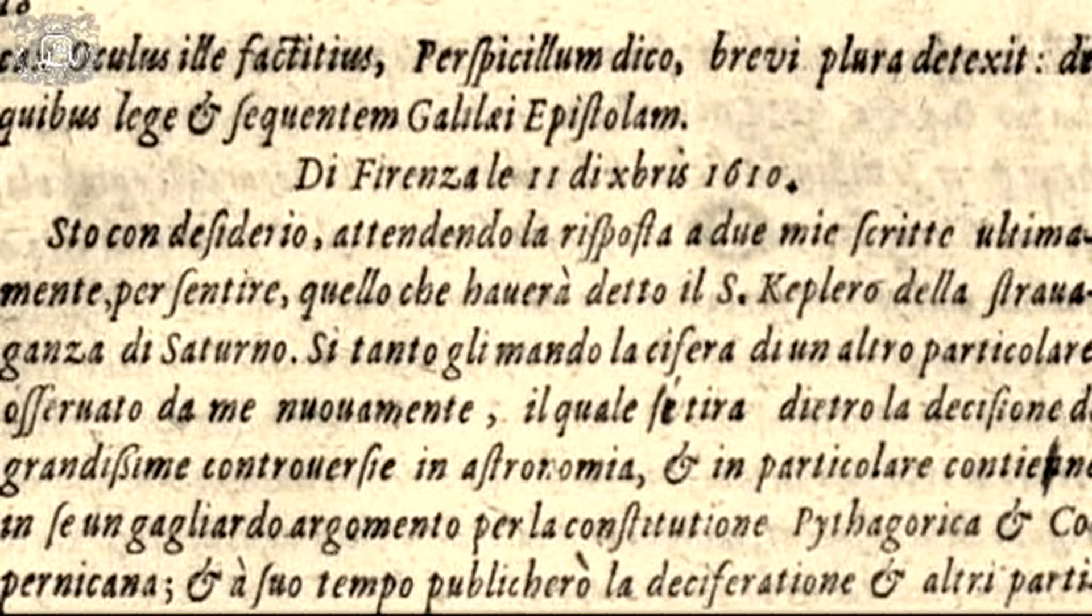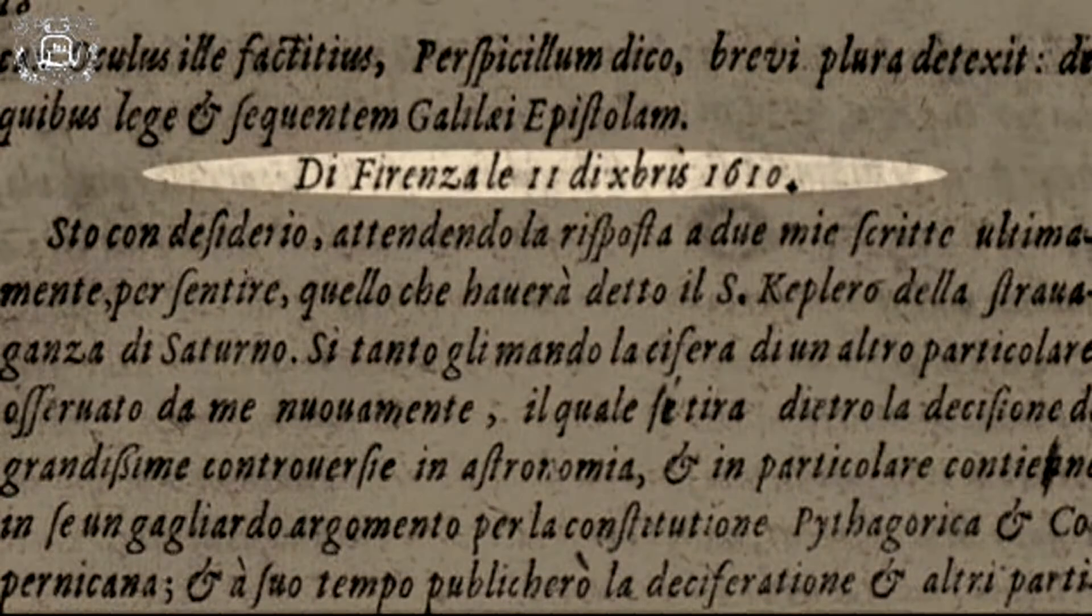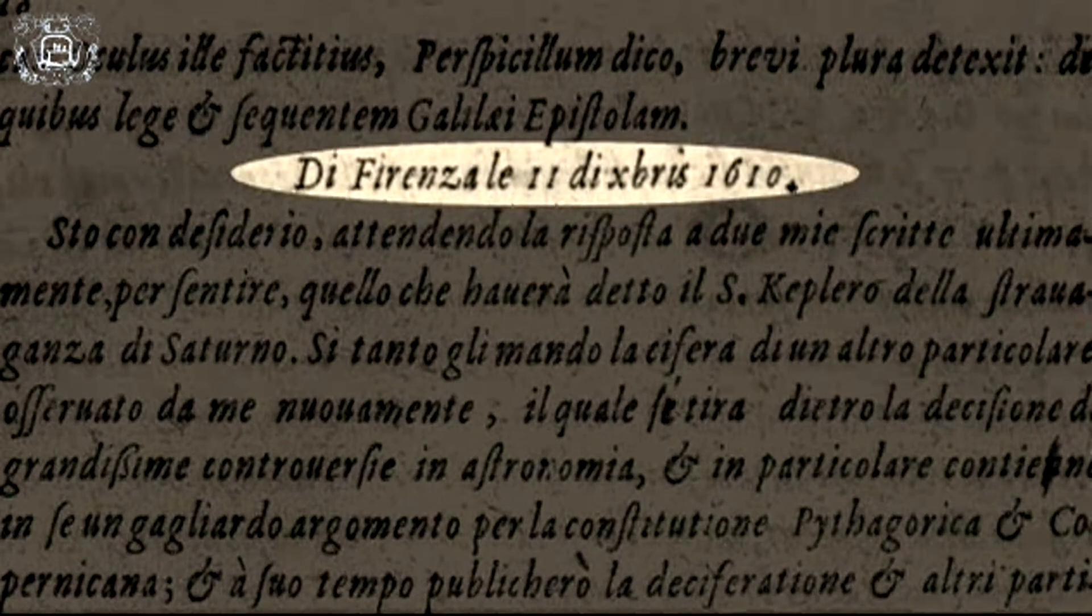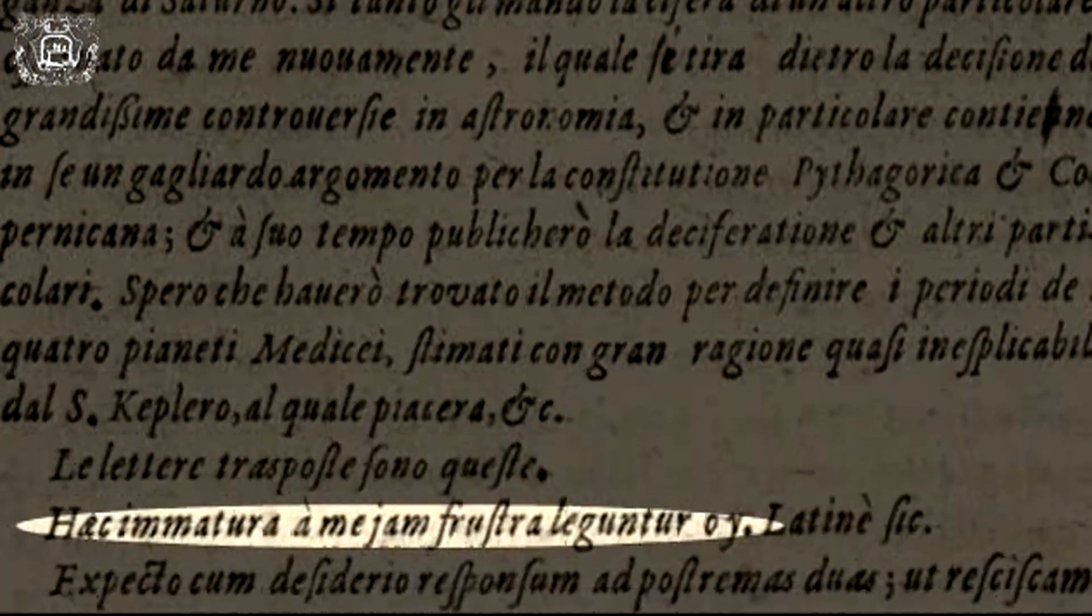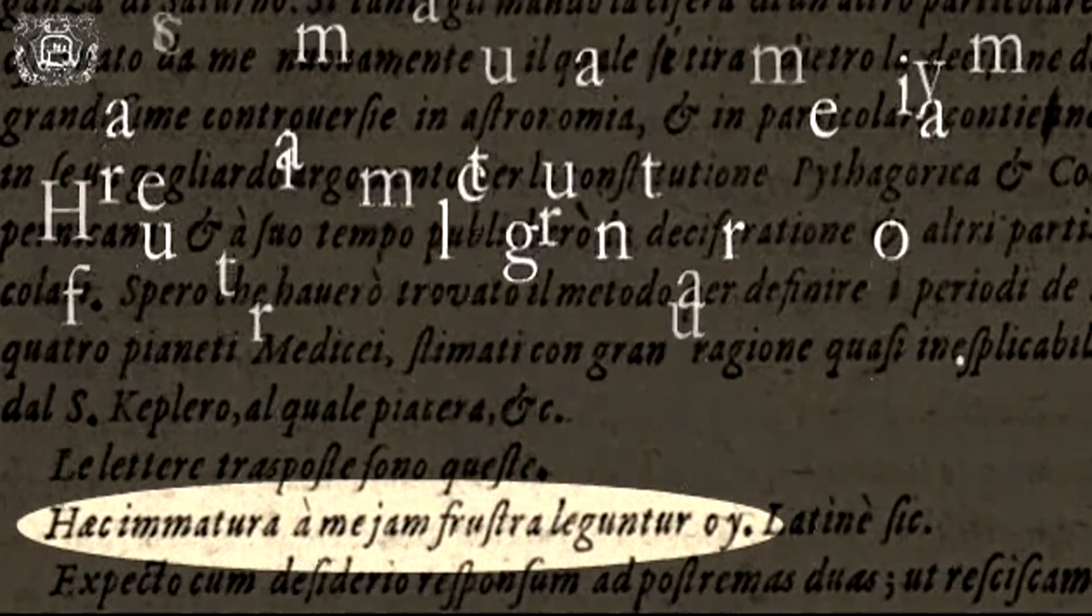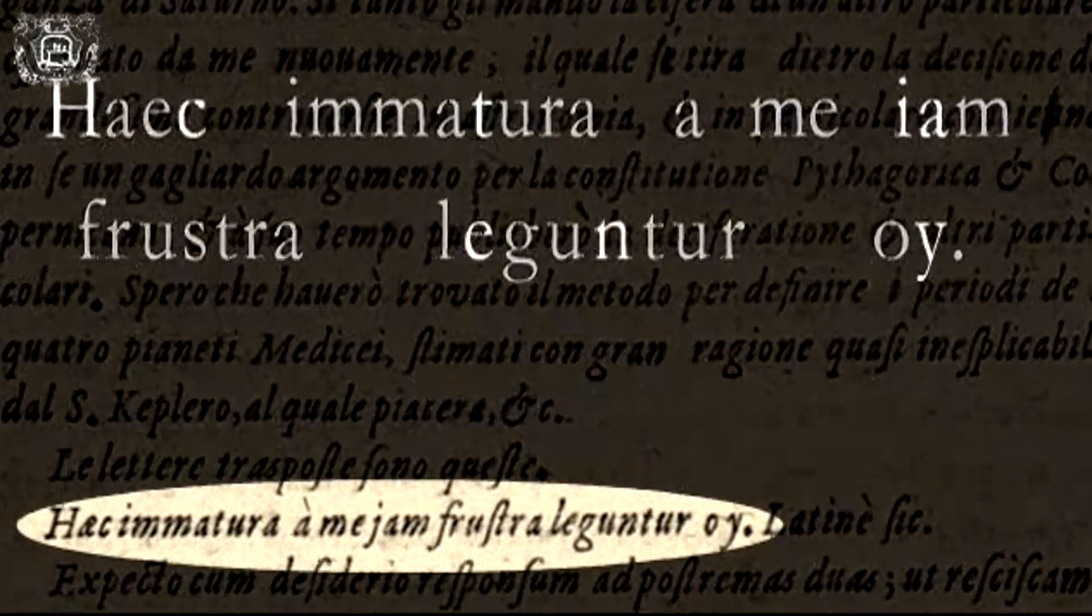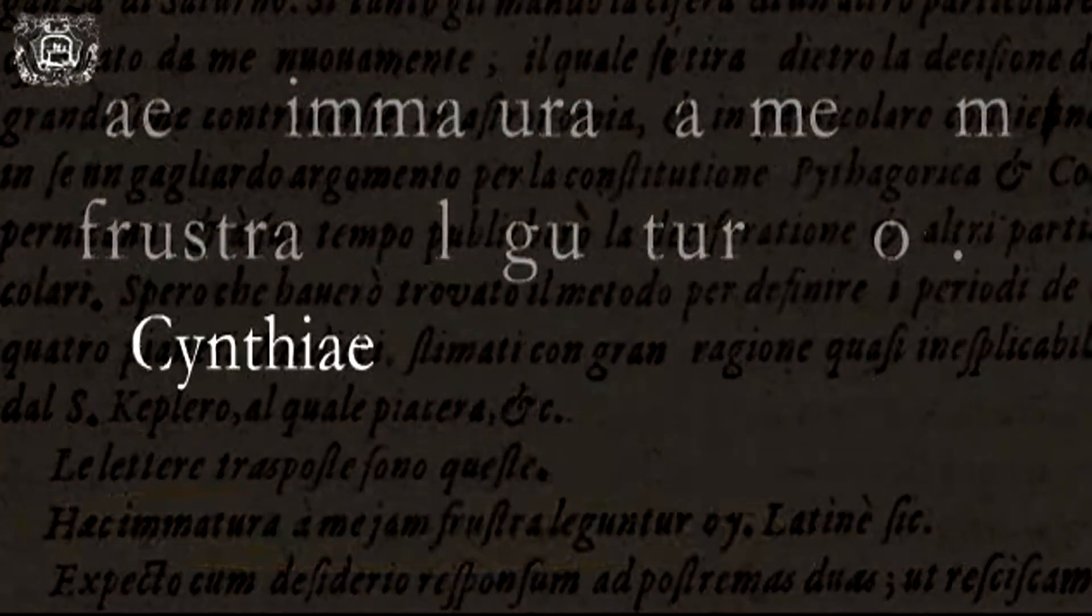In a letter to Giuliano de' Medici, Tuscan ambassador to Prague, dated December 11, 1610, Galileo made the announcement of a sensational astronomical discovery by means of a complex anagram that Kepler tried in vain to decipher.